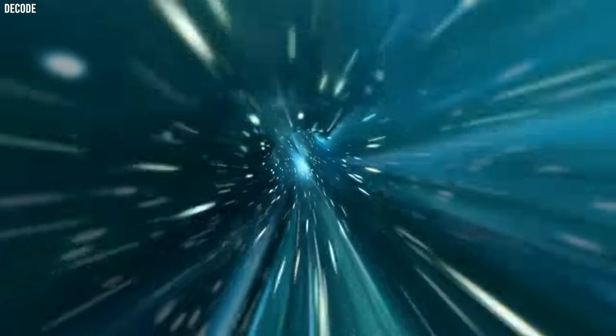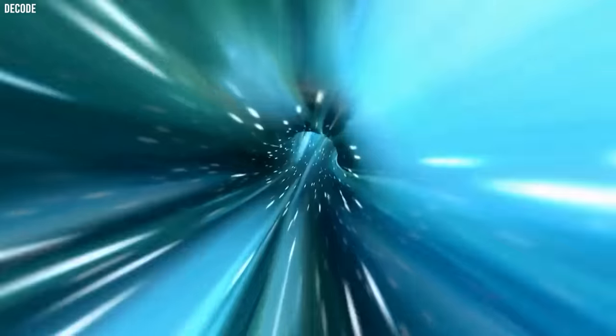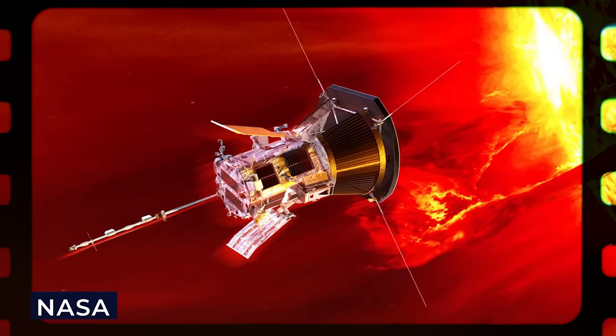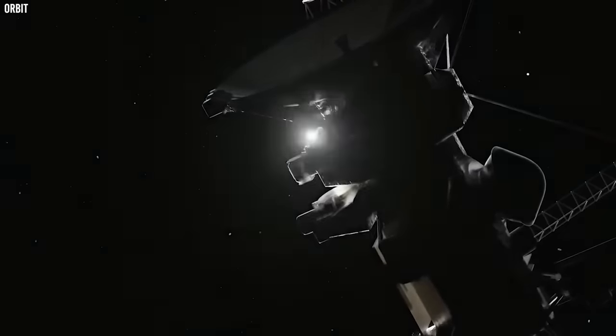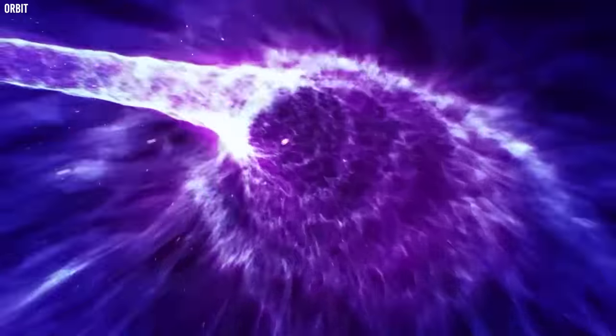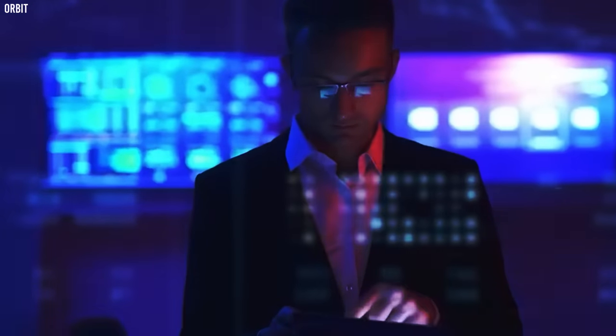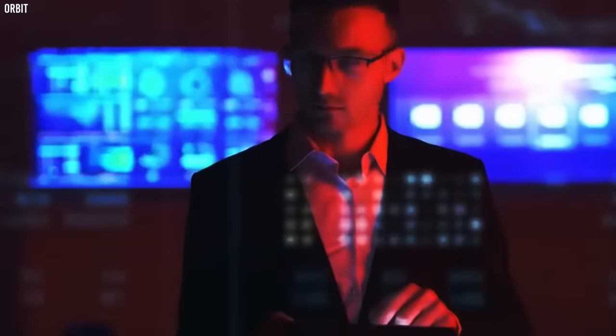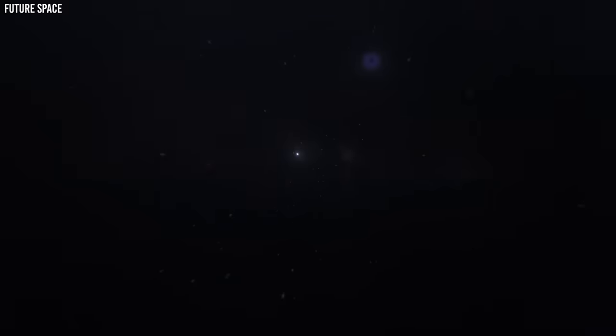However amazing that may sound, spacecraft travel faster than any other man-made object. They use rockets to achieve the 25,000 miles per hour necessary to escape Earth's gravity. The Parker Solar Probe built by NASA is the fastest spacecraft ever. In 2018, it was launched from Earth and used the sun's gravity to accelerate to a speed of 330,000 miles per hour as it sped through space. Incredibly, that speed is merely 0.05 of the speed of light.